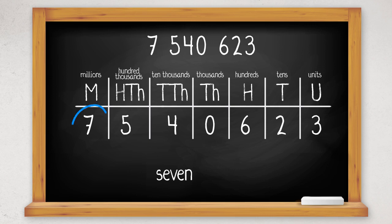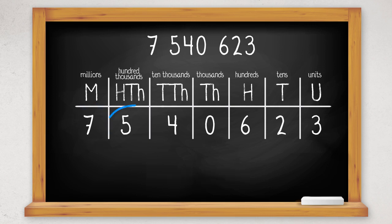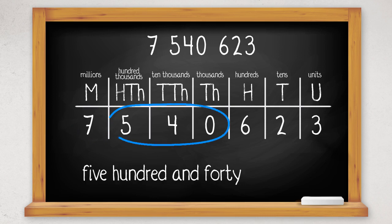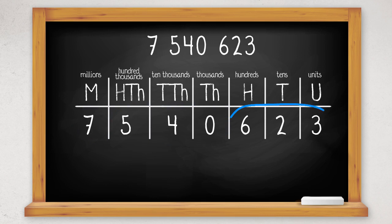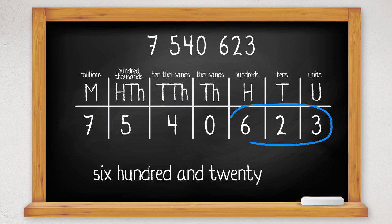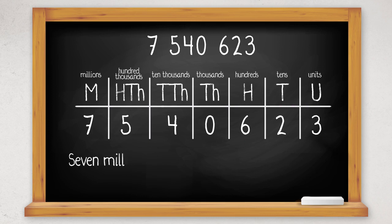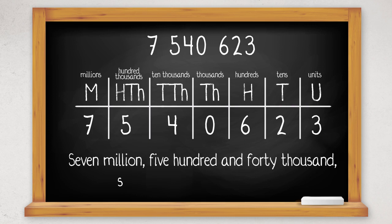So we now know that we have seven million. Then look at the hundred thousands, ten thousands, and thousands column — we have five hundred and forty thousand. In the hundreds, tens, and units columns, we have six hundred and twenty-three. So the number in words is seven million, five hundred and forty thousand, six hundred and twenty-three.